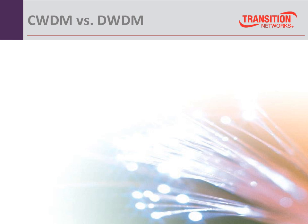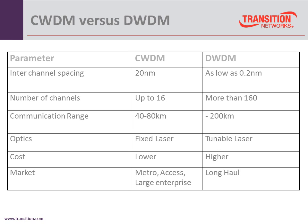CWDM versus DWDM: the interspacing is different. CWDM is 20 nanometers; DWDM can be as low as 0.2 nanometers, but 0.8 is typically the center, giving up to 160 channels. CWDM uses fixed lasers — once I plug in 1470, it's 1470. DWDM uses tunable SFPs that can adjust to different wavelengths, though they cost more.